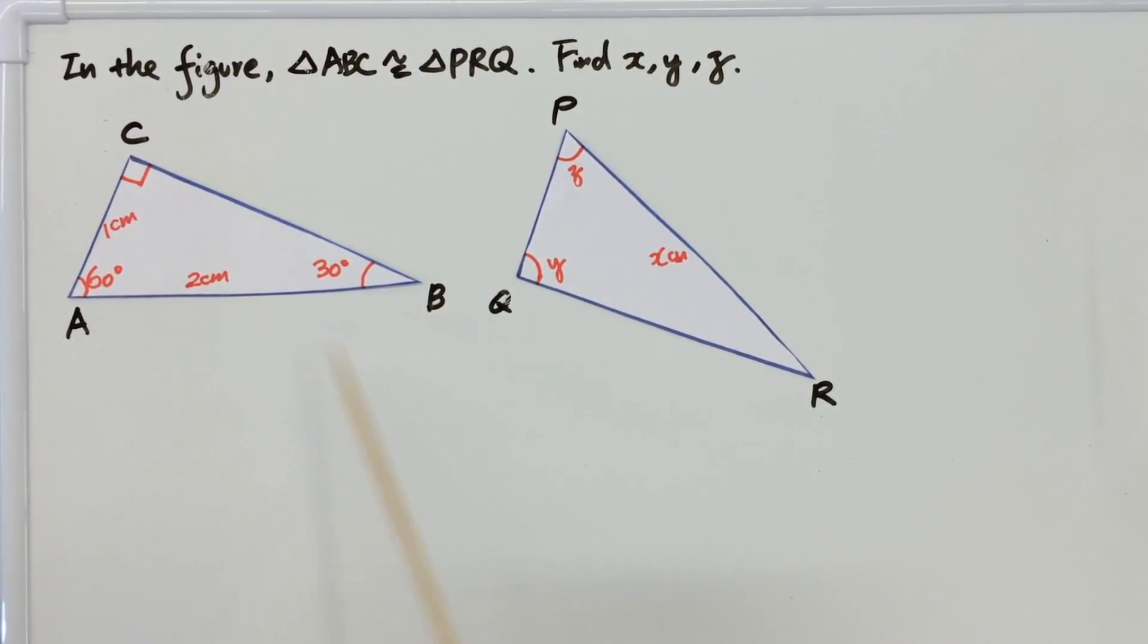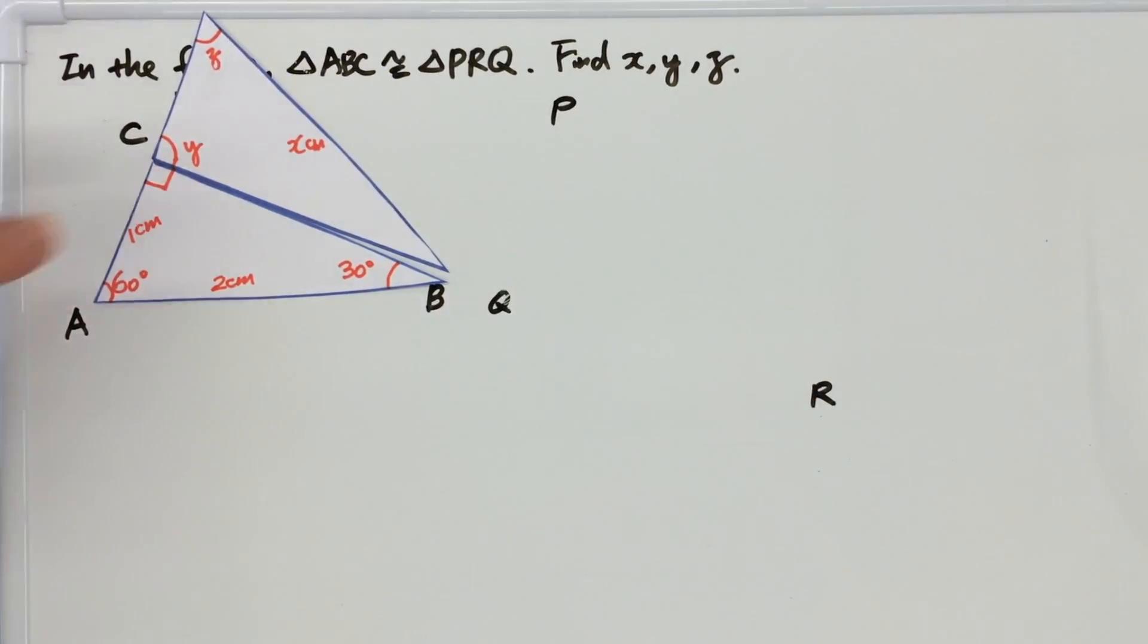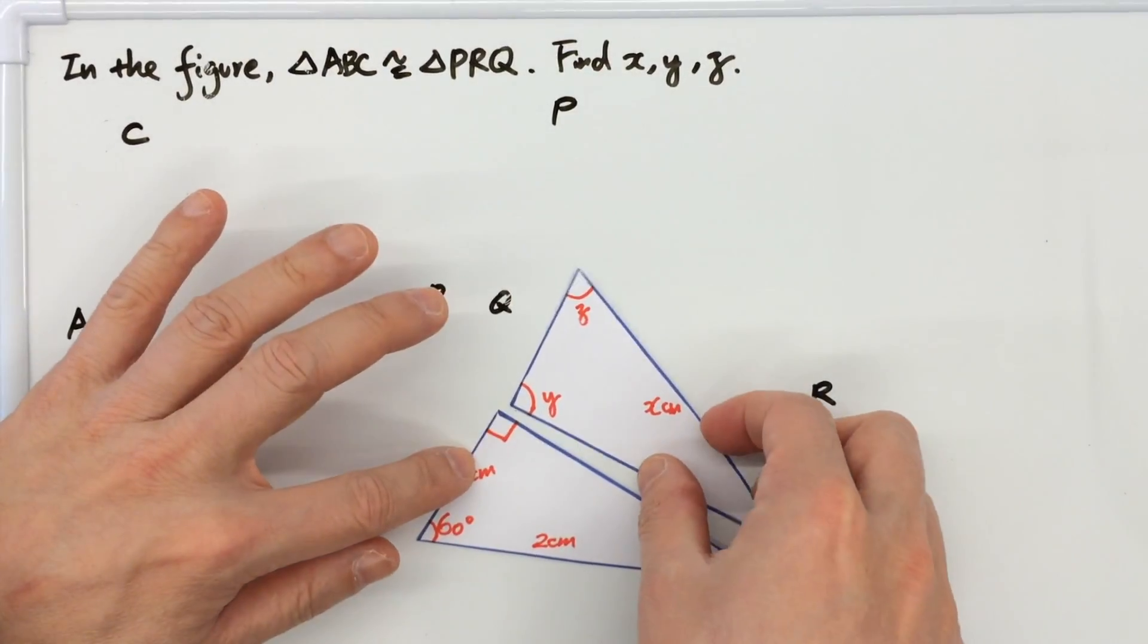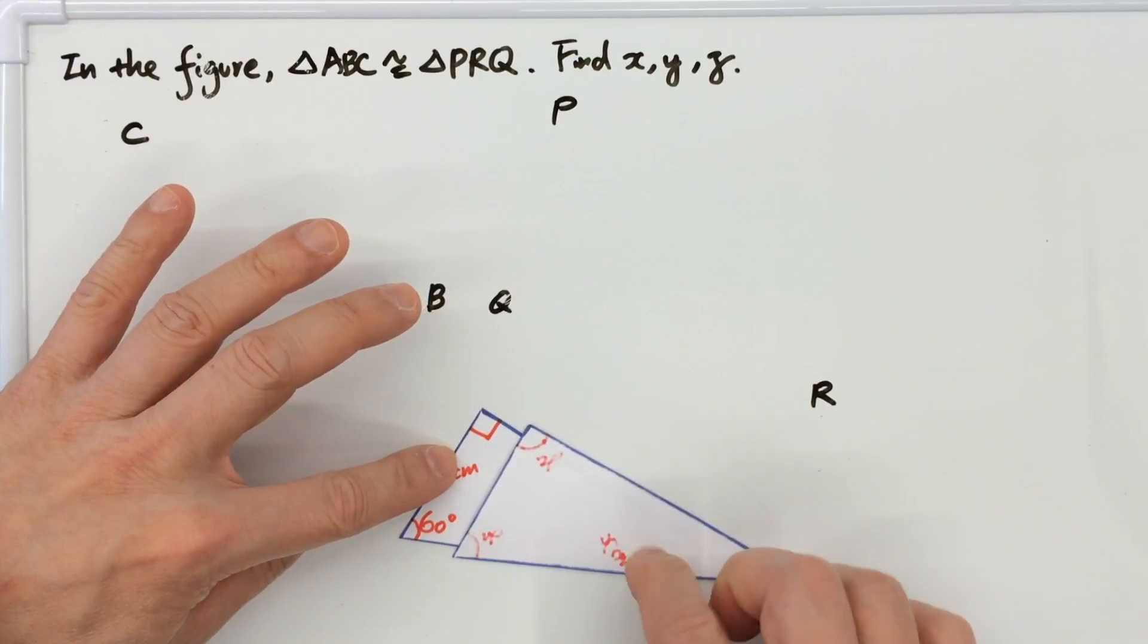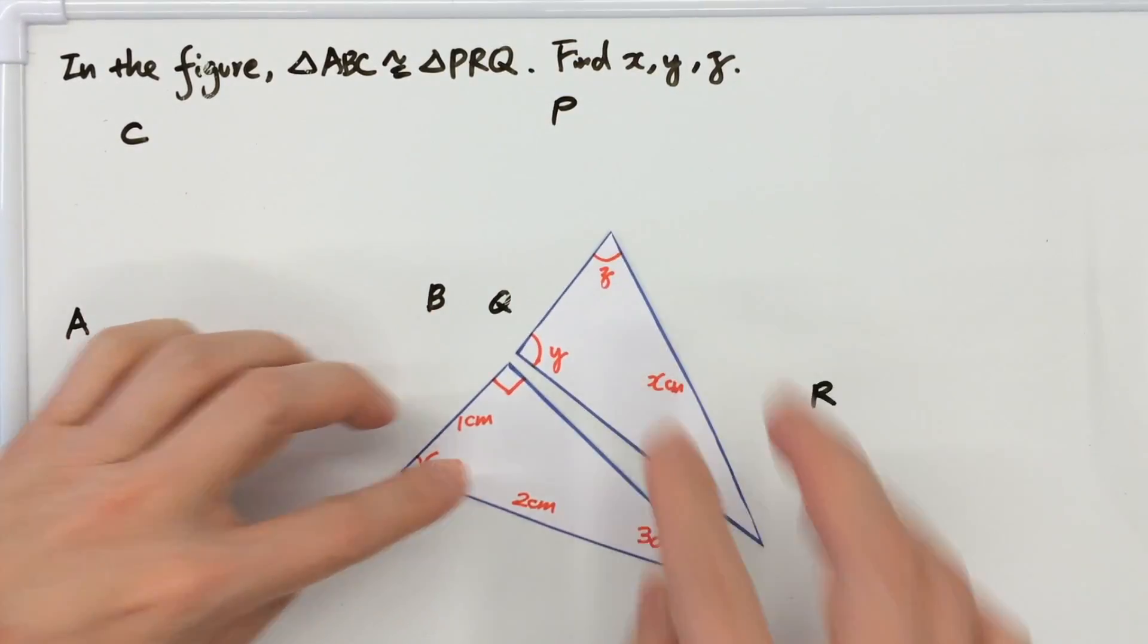This is triangle ABC and PRQ. If they are congruent, that means they can overlap with each other. If I do a translation, if I do another reflection of PRQ, now we can see that they can overlap with each other.